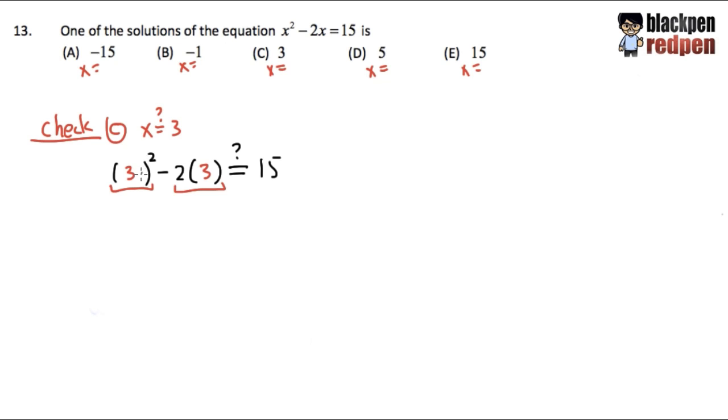3 squared, 3 times 3, that will give us 9. And then we'll bring down the minus. 2 times 3, that will give us 6. Will this give us 15? Certainly not! Because 9 minus 6 is equal to 3. And 3 is definitely not equal to 15.